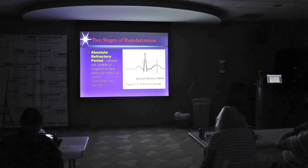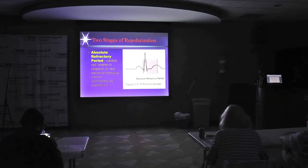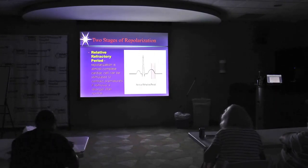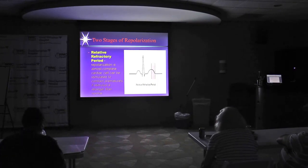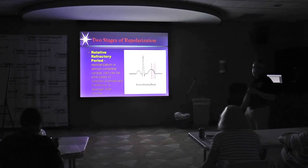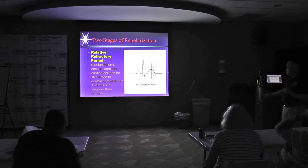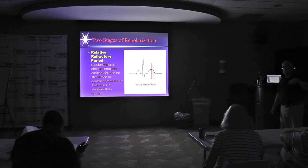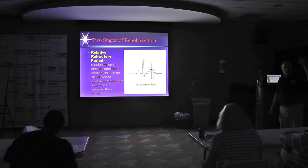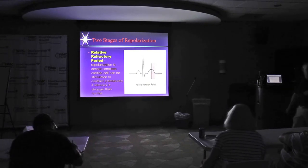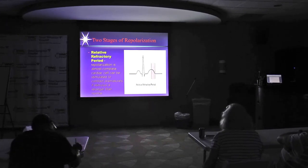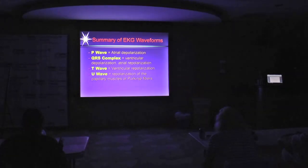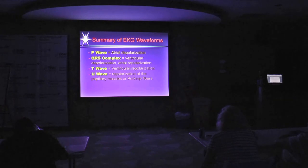During the absolute refractory period, nothing can make the heart beat — the ventricles are spent. On the relative refractory side, something can trigger a beat, and the fear is a strike to the chest or a premature beat. Premature ventricular contractions (PVCs) or premature atrial contractions — depending on where the impulse started — are early beats. If a premature beat falls on the relative refractory period, it could throw the patient into V-fib. To summarize: P wave is atrial depolarization; QRS is ventricular depolarization; T wave is ventricular repolarization; the U wave is probably Purkinje fiber repolarization.